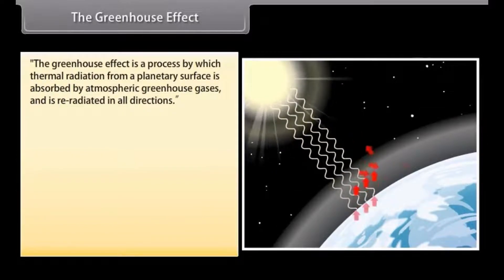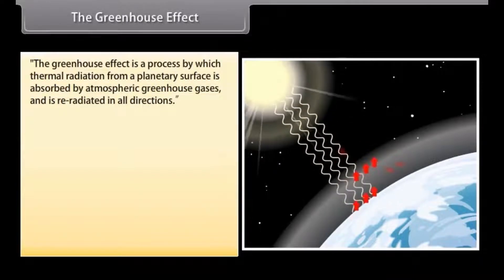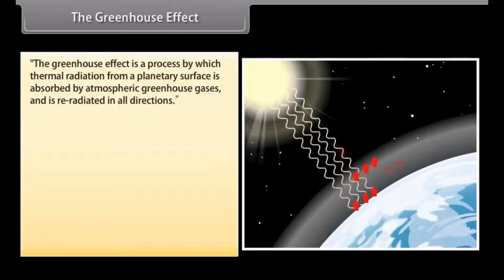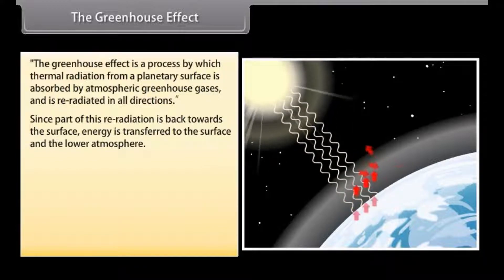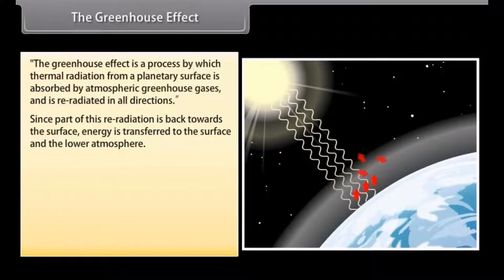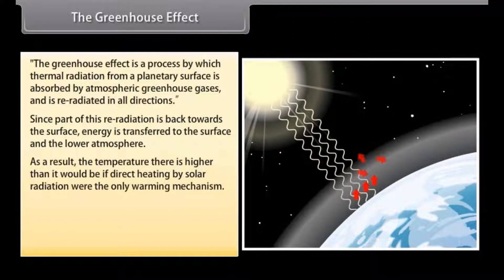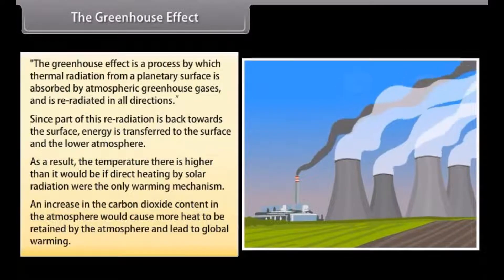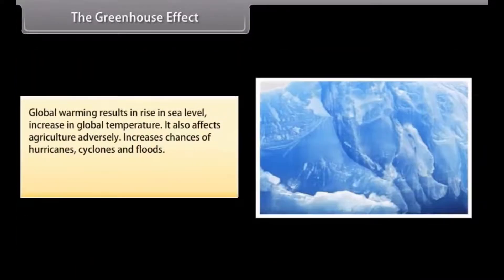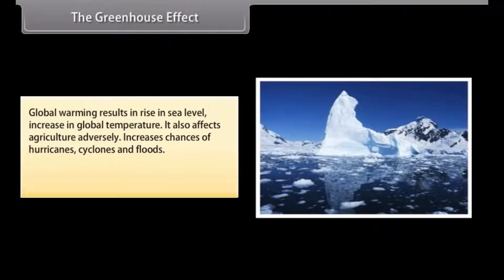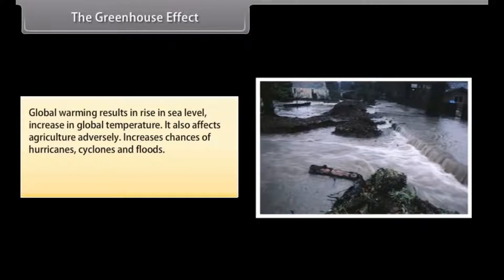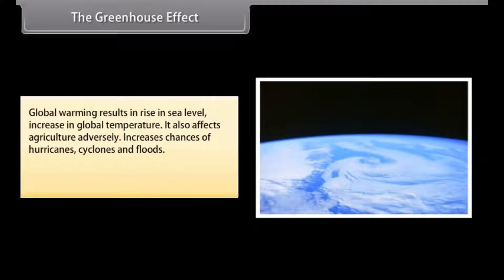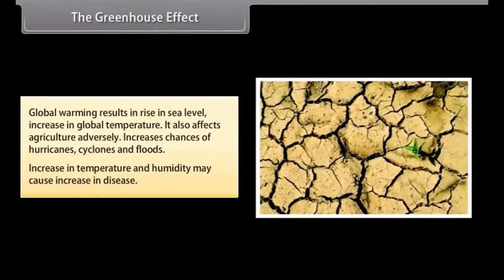The greenhouse effect: The greenhouse effect is a process by which thermal radiation from a planetary surface is absorbed by atmospheric greenhouse gases and is re-radiated in all directions. Since part of this re-radiation is back towards the surface, energy is transferred to the surface and the lower atmosphere. As a result, the temperature there is higher than it would be if direct heating by solar radiation were the only warming mechanism. An increase in the carbon dioxide content in the atmosphere would cause more heat to be retained by the atmosphere and lead to global warming. Global warming results in rise in sea level, increase in global temperature. It also affects agriculture adversely, increases chances of hurricanes, cyclones, and floods. Increase in temperature and humidity may cause increase in disease.